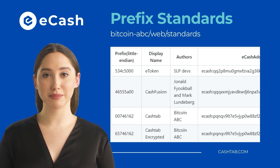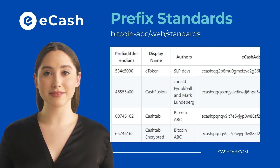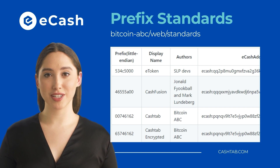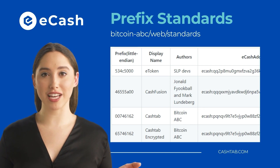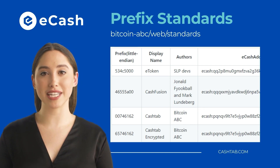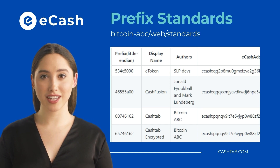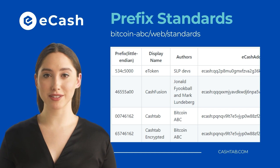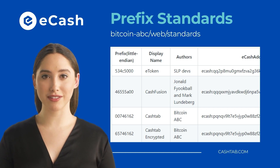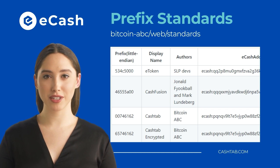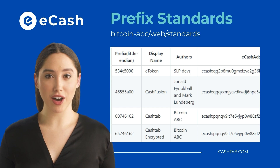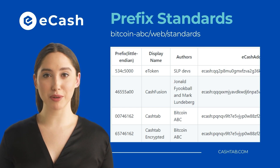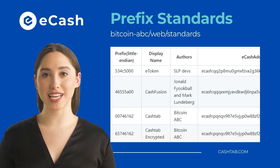If you are a developer using an OP_RETURN prefix for your e-cash app, you can now claim your desired prefix by submitting a diff to the prefix standards section of the Bitcoin ABC repo, located within the web/standards folder. Please ensure your diff includes a display name for your protocol, an author for the prefix, a URL pointing to the specification of the protocol, and an e-cash address to avoid ambiguity.